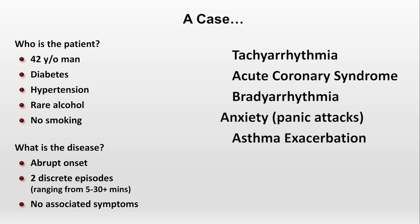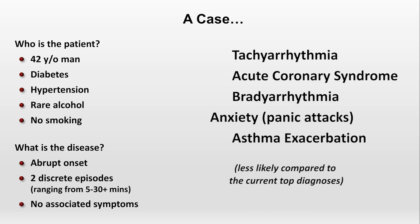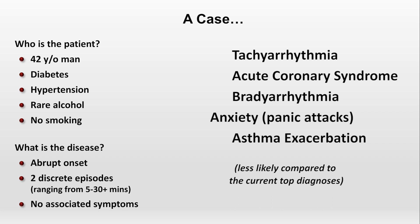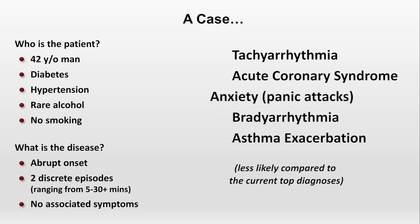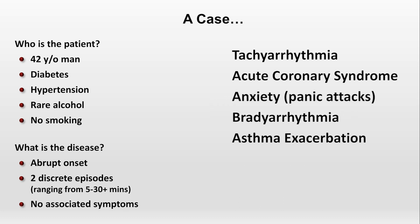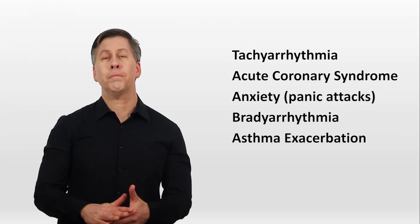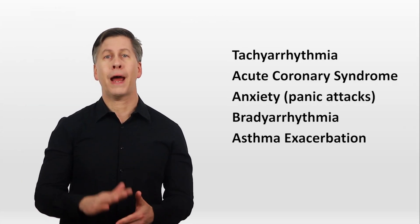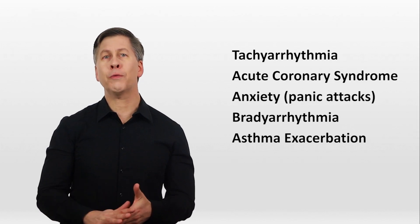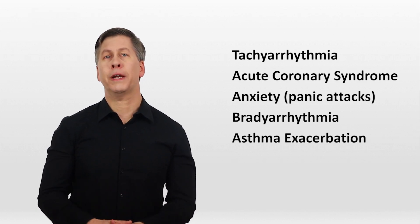And last is anxiety. We haven't been given any specific psychiatric history, but if we were to assume that's because he has none rather than it just being a bad omission — which is a bit of an assumption — that will make something like a panic attack a bit less likely, but still certainly possible given his history. So when all is said and done, my differential might look like this: tachyarrhythmia, ACS, panic attack, bradyarrhythmia, and asthma exacerbation.